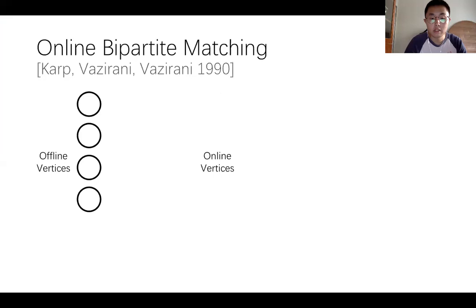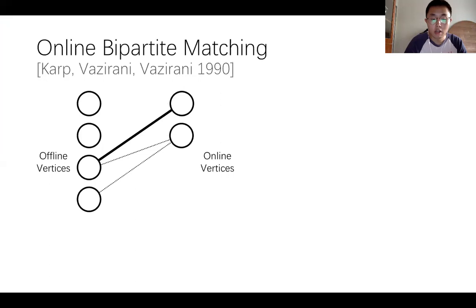There is a bipartite graph G with offline and online vertices. Offline vertices are given upfront, while online vertices arrive one by one. When the first online vertex arrives, its adjacent edges are released and then the algorithm will decide to match it to one of its neighbors immediately and irrevocably. The matched offline vertex can no longer be matched to other online vertices, so the second online vertex has only one choice, and then the same to the third one.